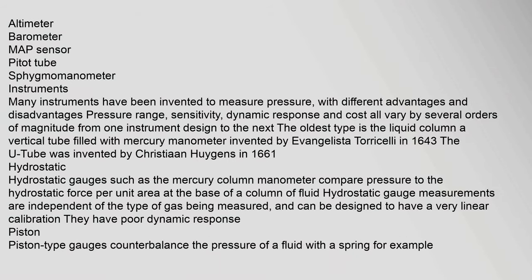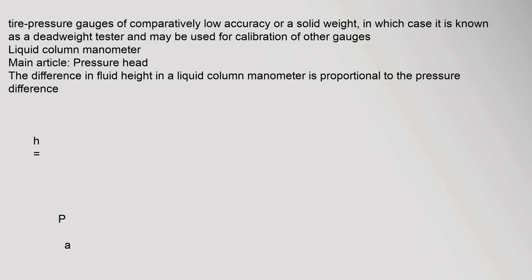Many instruments have been invented to measure pressure, with different advantages and disadvantages. Pressure range, sensitivity, dynamic response, and cost all vary by several orders of magnitude from one instrument design to the next. The oldest type is the liquid column — a vertical tube filled with mercury — the manometer, invented by Evangelista Torricelli in 1643. The U-tube was invented by Christian Huygens in 1661. Hydrostatic gauges, such as the mercury column manometer, compare pressure to the hydrostatic force per unit area at the base of a column of fluid. Piston type gauges counterbalance the pressure of a fluid with a spring or a solid weight, the latter known as a deadweight tester.